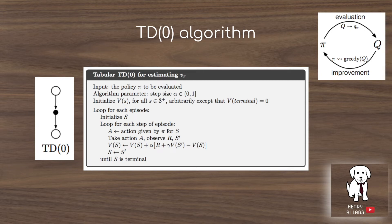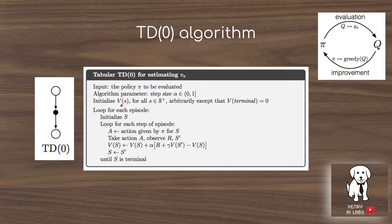Let's look at the full TD(0), or one-step look-ahead temporal difference learning algorithm, used to evaluate value functions given a certain policy. We take the policy, set a step size controlling how much we update our value estimate at each sample, initialize the value estimates of every state, then loop through taking actions given by the policy. We observe the reward and subsequent state, then update the state's value based on the reward achieved at that step plus the discount factor times the value estimate of the subsequent state, minus our original prediction. We repeat this until the end of the episode.